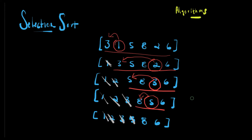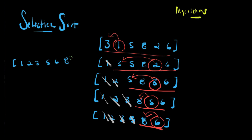We do one last pass for eight and six — another linear search, get the smallest value, and switch it with the earliest value in the array, which is going to be eight, the fifth one. Our outcome will be one, two, three, five, six, and eight. With that, the array is considered sorted.